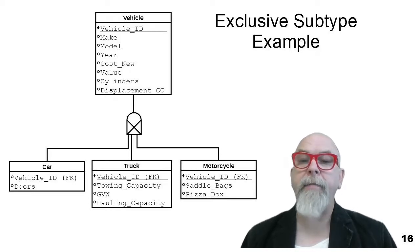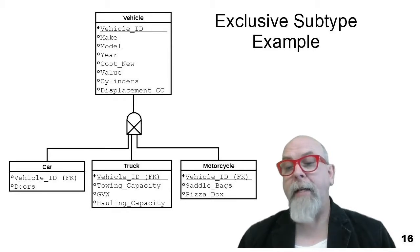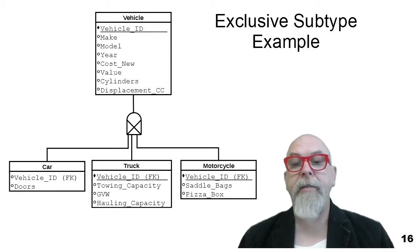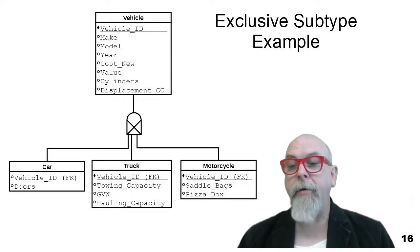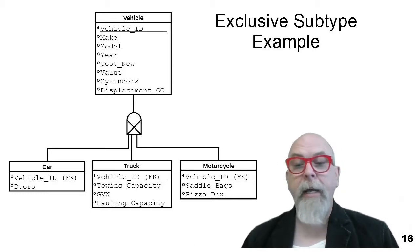Here's an example of an exclusive subtype. A vehicle with its make, model, gear, new cost, value, number of cylinders, and engine size in cubic centimeters could either be a car, a truck, or a motorcycle. A car would have a number of doors. A truck would have towing capacity, gross vehicle weight, and hauling capacity. A motorcycle might have saddlebags or a pizza box on the back for food delivery. The subtype relationship here is exclusive — you can only be a car, a truck, or a motorcycle; you can't be two or three of them at the same time.